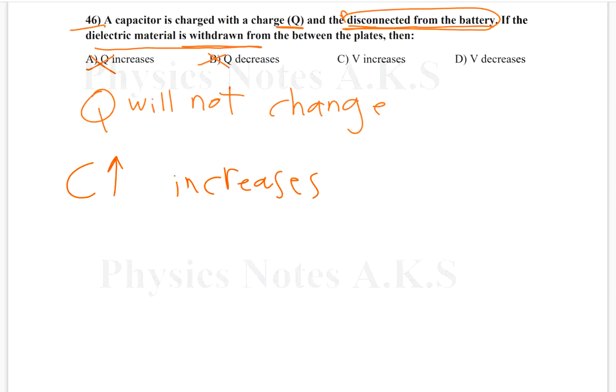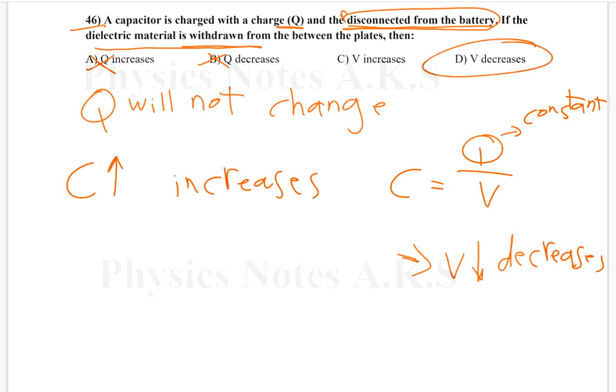And using this formula, C equals Q over V. Since this one is constant, and capacitance will increase, this means that V will decrease. The voltage will decrease. So the answer is D.